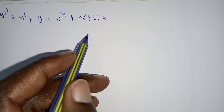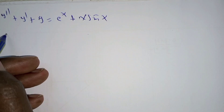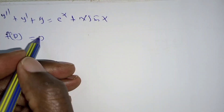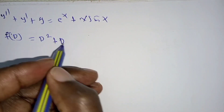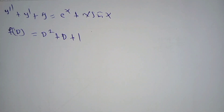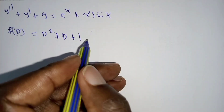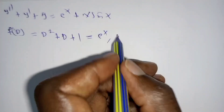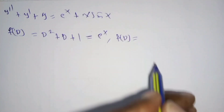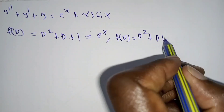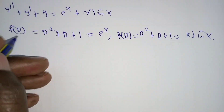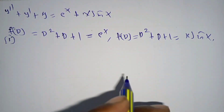We solve the particular case of this equation, written in symbolic form: f(D) = D² + D + 1. This has two parts — the first where the right-hand side equals e^x, and the second where f(D) = D² + D + 1 equals x·sin(x). I'll start with case one and label the other as case two.